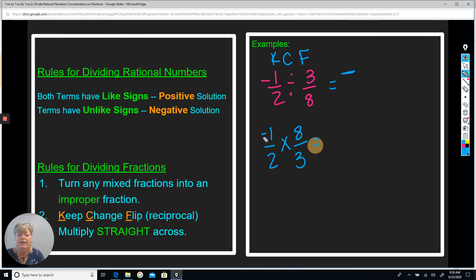That's going to give me negative one times eight is negative eight. Two times three is six. And so my answer is negative. This is the improper fraction. So I need to turn it into a proper fraction or to a mixed fraction.